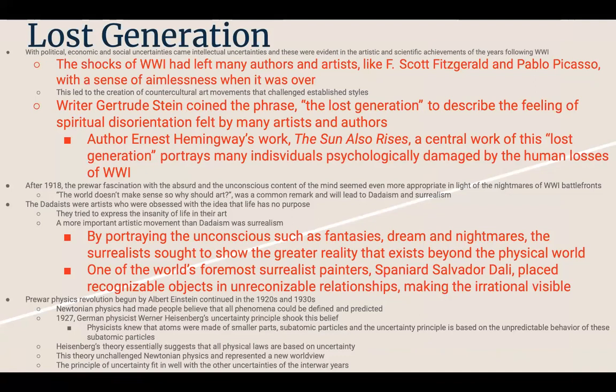With political, economic, and social uncertainties came intellectual uncertainties evident in the artistic and scientific achievements of the years following World War One. The shocks of the war left many authors like F. Scott Fitzgerald and artists like Pablo Picasso with a sense of aimlessness. Writer Gertrude Stein coined the phrase 'the lost generation' to describe the feeling of spiritual disorientation felt by many artists and authors. Ernest Hemingway's work The Sun Also Rises was a central work of this lost generation, portraying individuals psychologically damaged by the human losses of World War One.